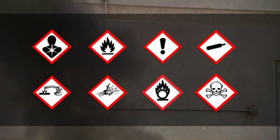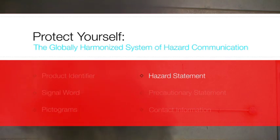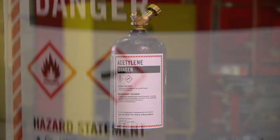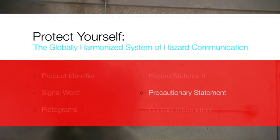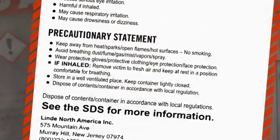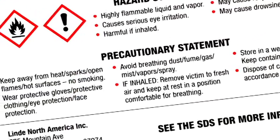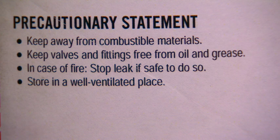Those are the eight pictograms that visually help you figure out the hazard category. The hazard statement describes the nature of the potential hazards. For acetylene, the hazard statement reads: contains gas under pressure, may explode if heated, extremely flammable gas. The precautionary statement describes the recommended protective measures you need to take — the precautions needed to protect yourself and those working around you, including how to prevent exposure and how to store and handle a chemical safely. For example, the precautionary statement for oxygen reads: keep away from combustible materials, keep valves and fittings free from oil and grease, in case of fire stop leak if safe to do so, store in a well-ventilated place.